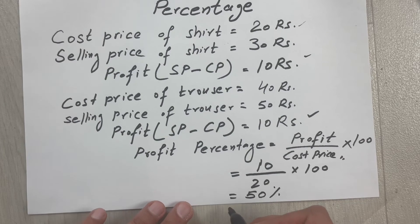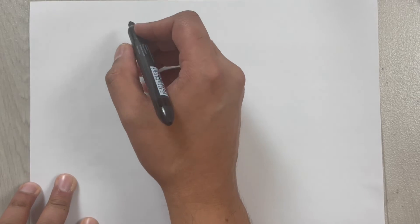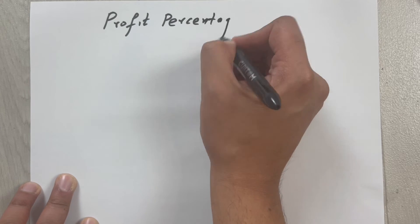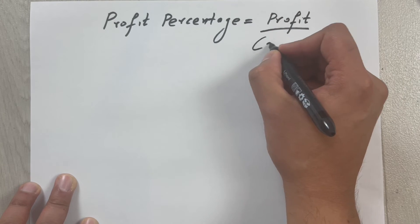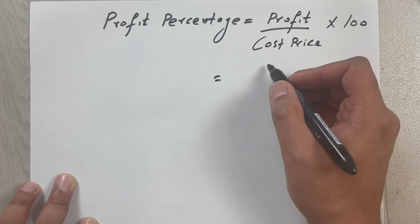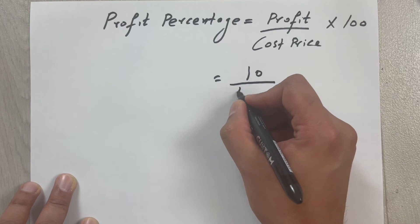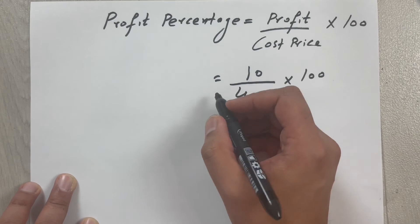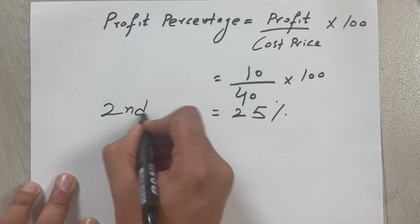So that's 50 percent for the first deal. For the second deal, we again apply the profit percentage formula: profit percentage equals profit divided by cost price, multiplied by 100. In the second deal we again made a profit of 10 rupees, and the cost price was 40. So 10 divided by 40, multiplied by 100, gives us 25 percent for the second deal — the trouser.